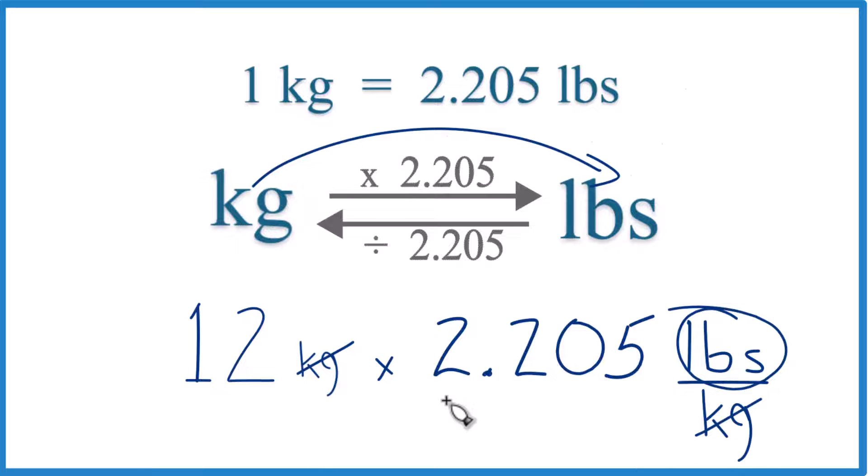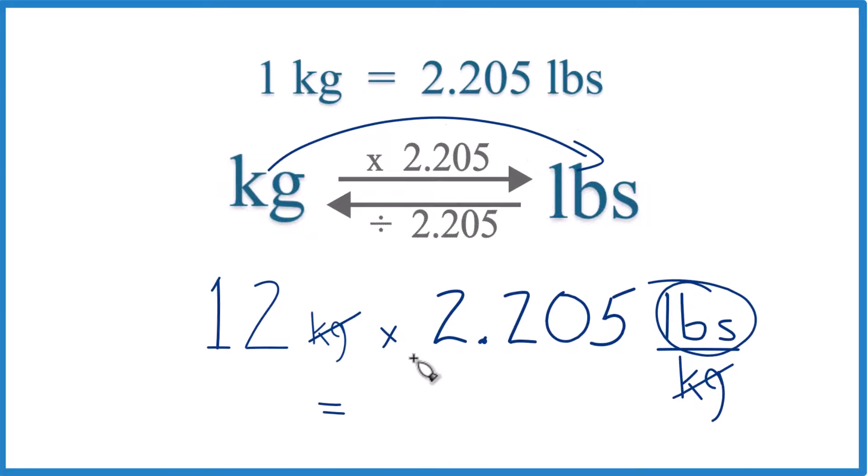So 12 times 2.205 pounds equals 26.46, and the units - that's pounds.